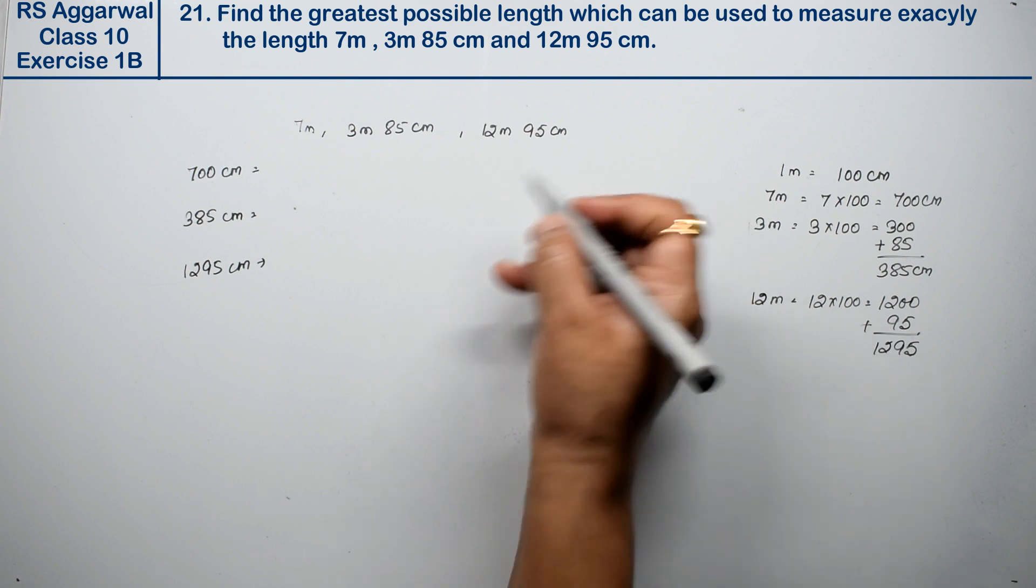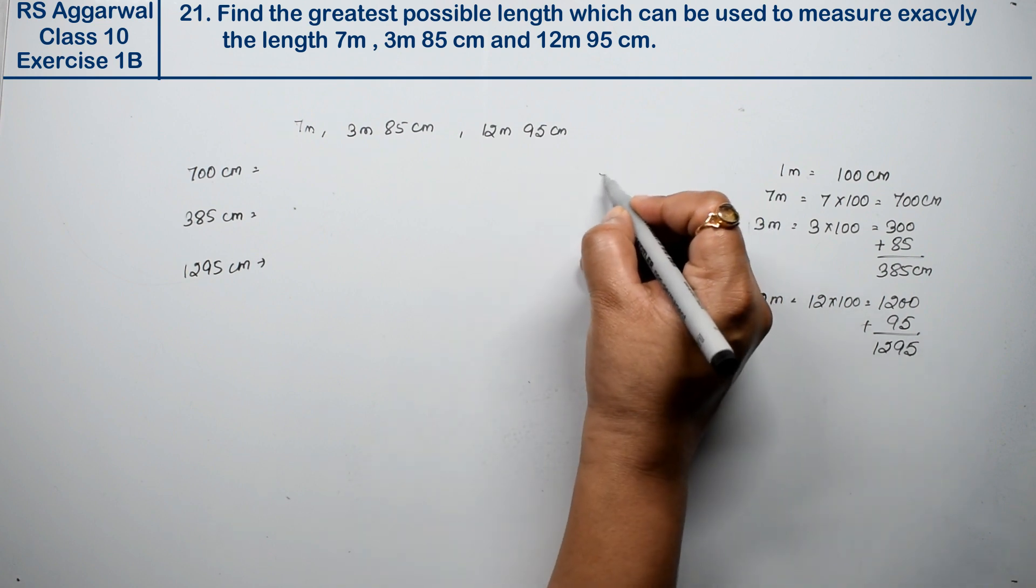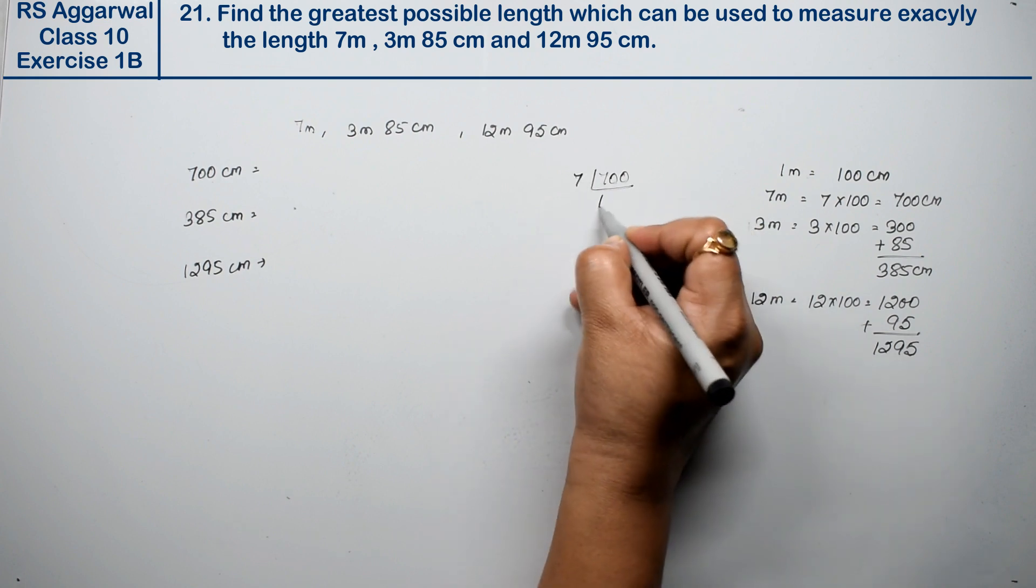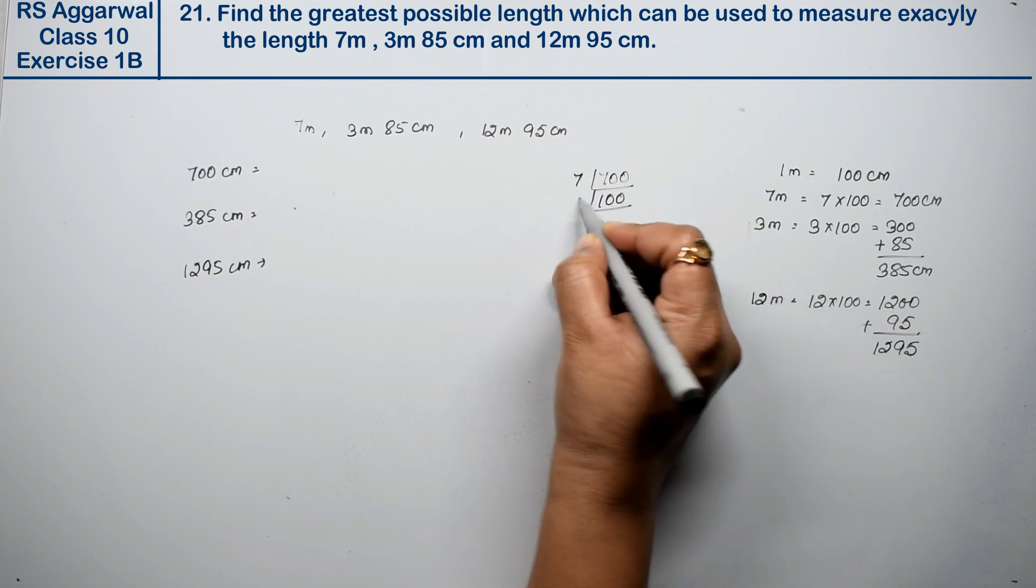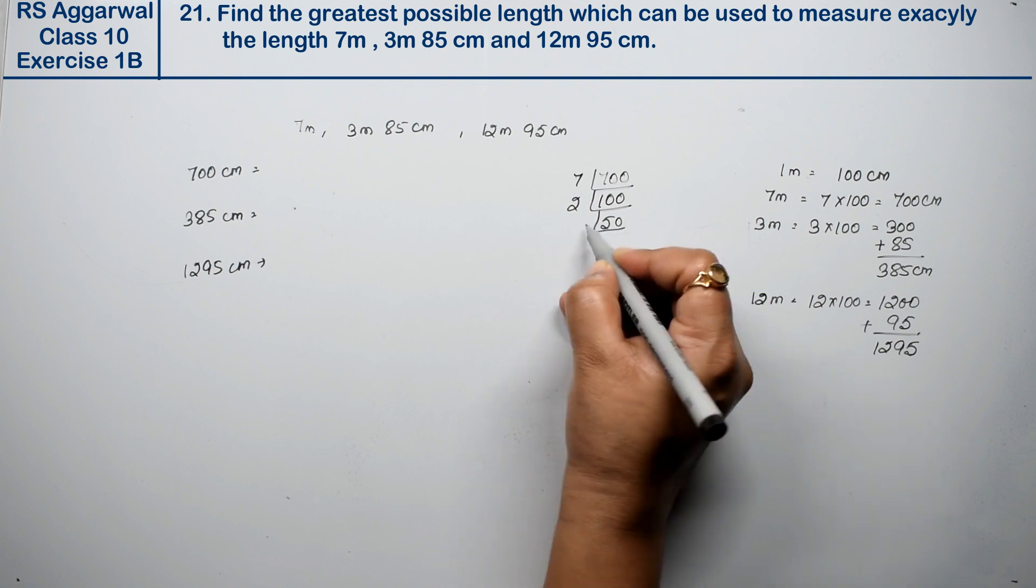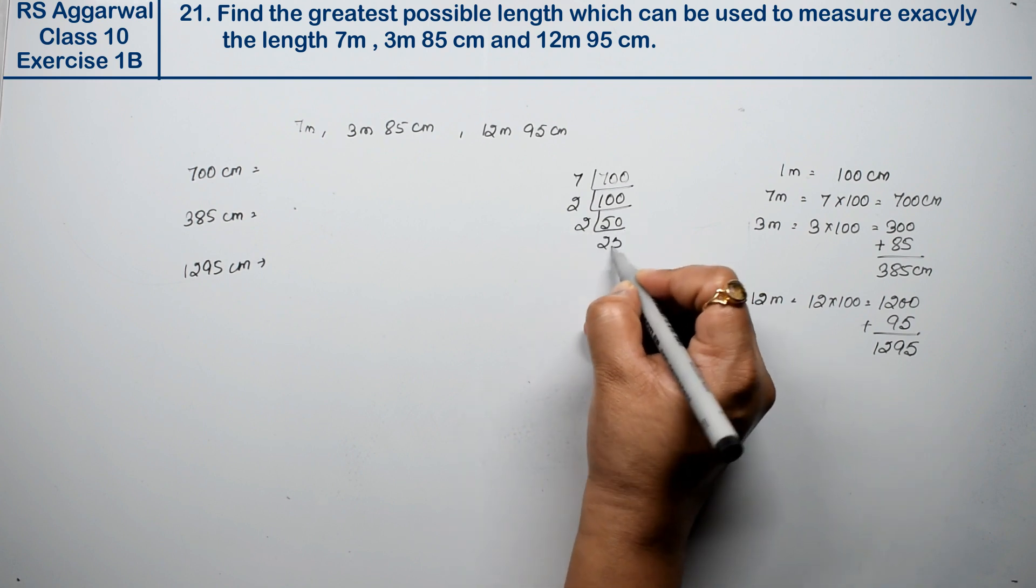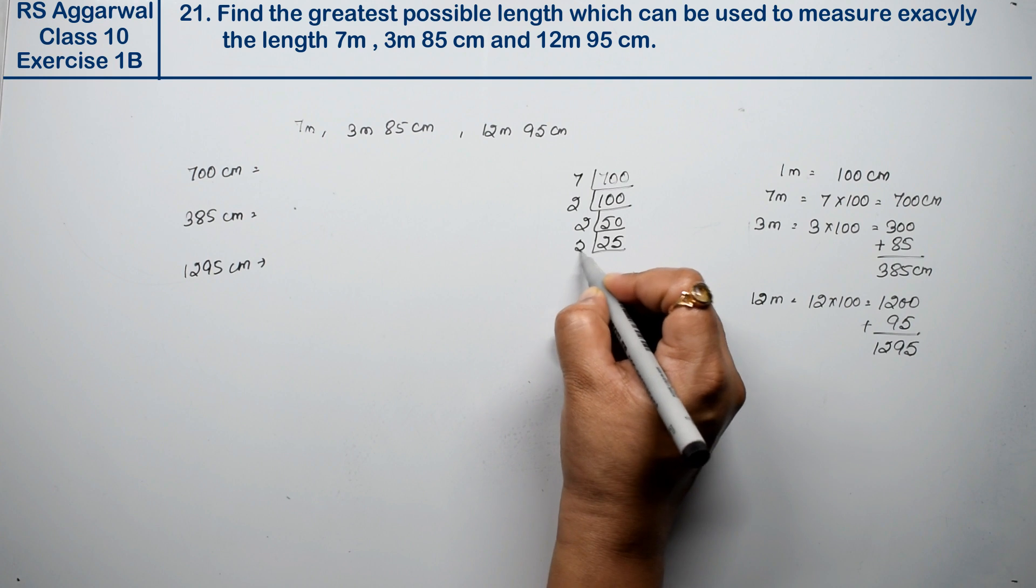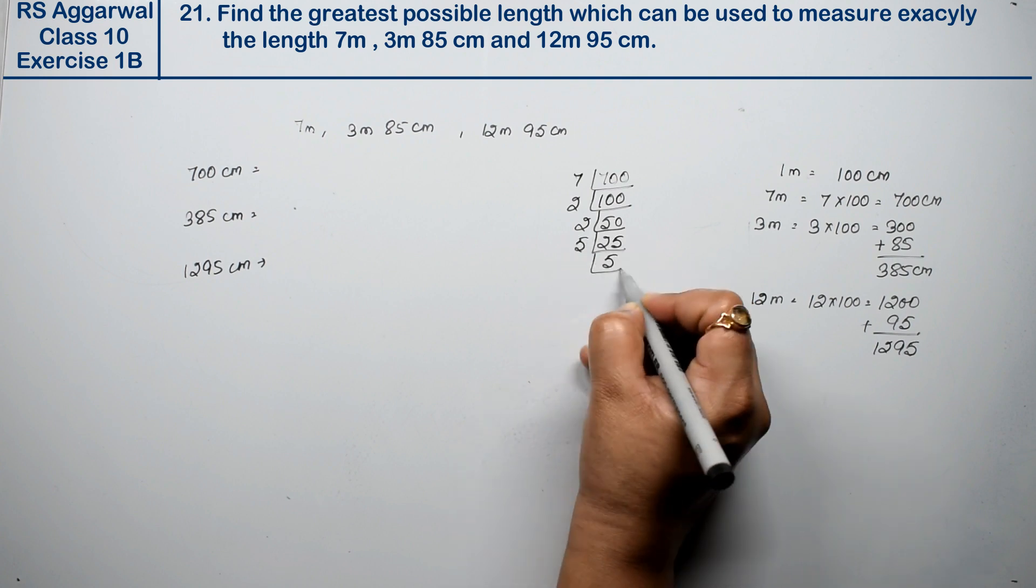Now let's find the prime factors of 700. 700 divided by 2 gives 350, divided by 2 again gives 175. 175 divided by 5 gives 35, divided by 5 again gives 7. So 700 equals 2 squared times 5 squared times 7.